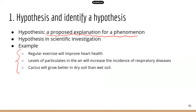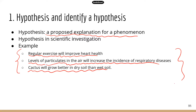There are a few hypothesis examples here. For example, if you observe exercise and cardiovascular health, you may come up with the hypothesis: regular exercise will improve heart health. Or if you're interested in air quality and human health — noticing particulates in the air from wildfires or industrial activities — you might hypothesize that levels of particulates in the air will increase the incidence of respiratory diseases.